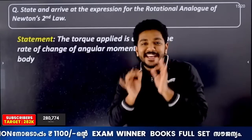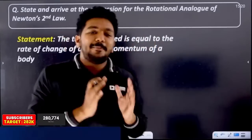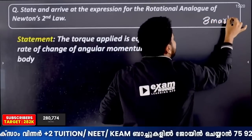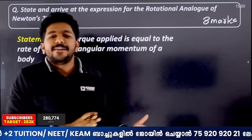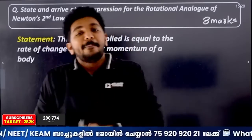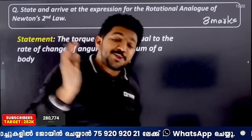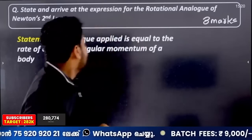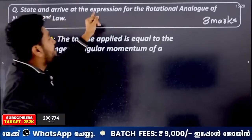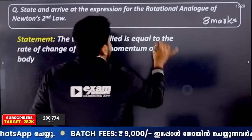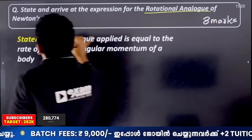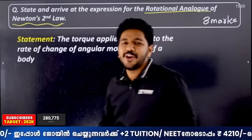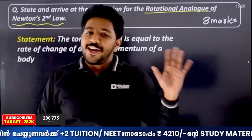Next, we'll try to develop a derivation in this chapter for three marks. This is a derivation of three marks. The derivation of the symbol is based on two steps. We are going to take a look at the rotational analog of Newton's second law. It is similar to Newton's second law but applies to rotational motion.